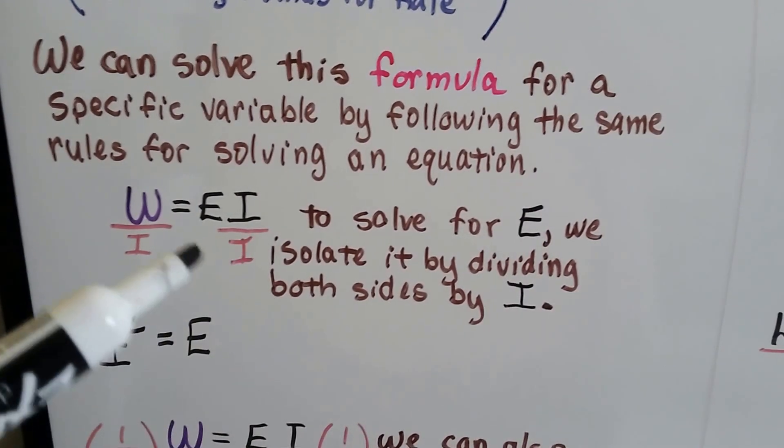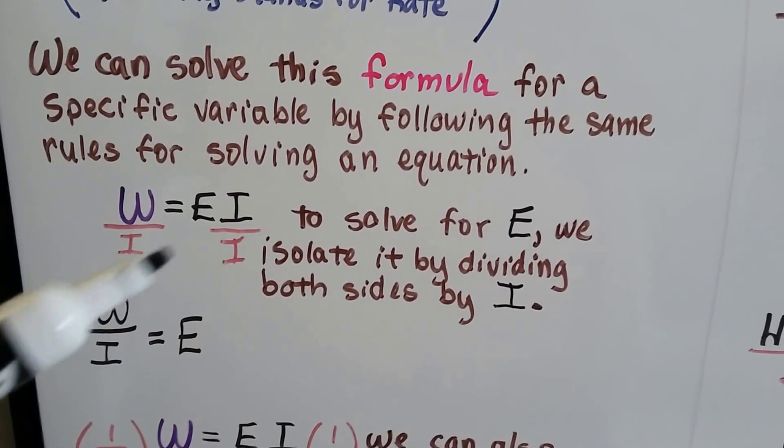If we want to solve it for I, we can divide both sides by the E and get W over E equals I.